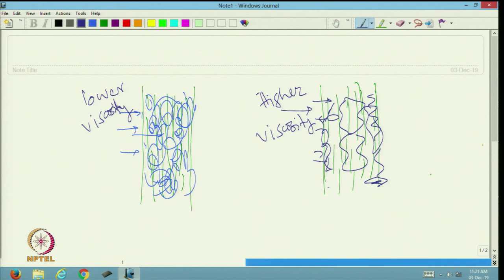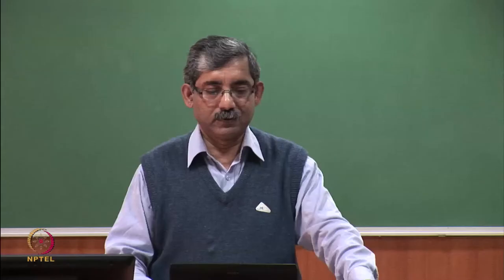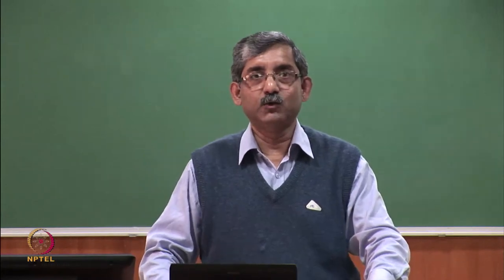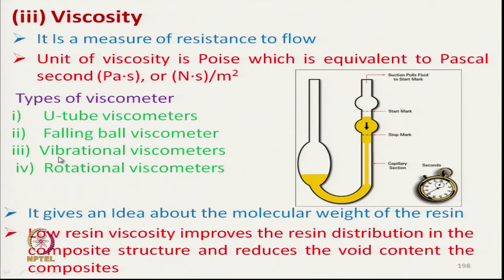Poor matrix penetration deteriorates composite characteristics. Viscosity is measured using a U-tube viscometer, falling ball viscometer, vibrational viscometer, or rotational viscometer. The principle is that a polymer with lower viscosity will flow at a higher rate, so the flow time gives an idea about the viscosity.